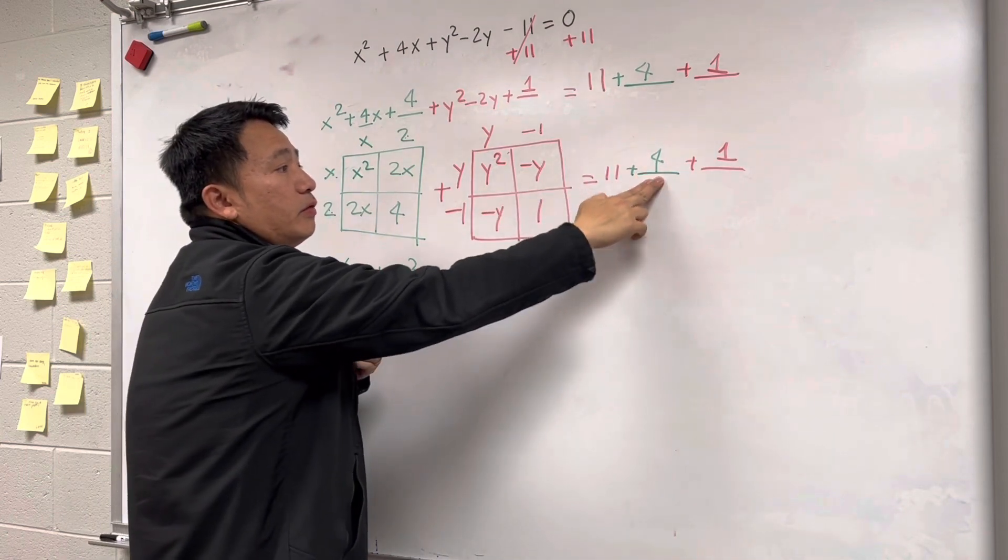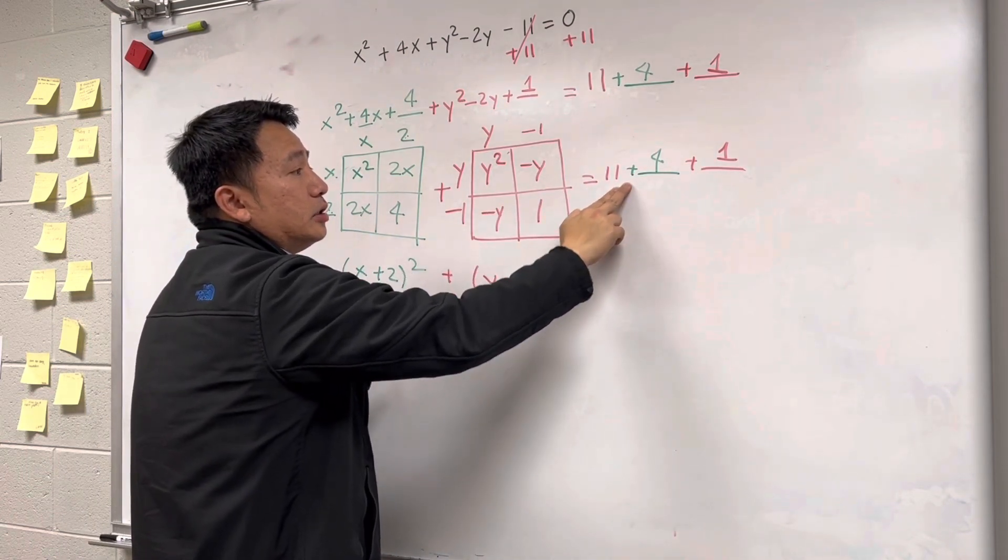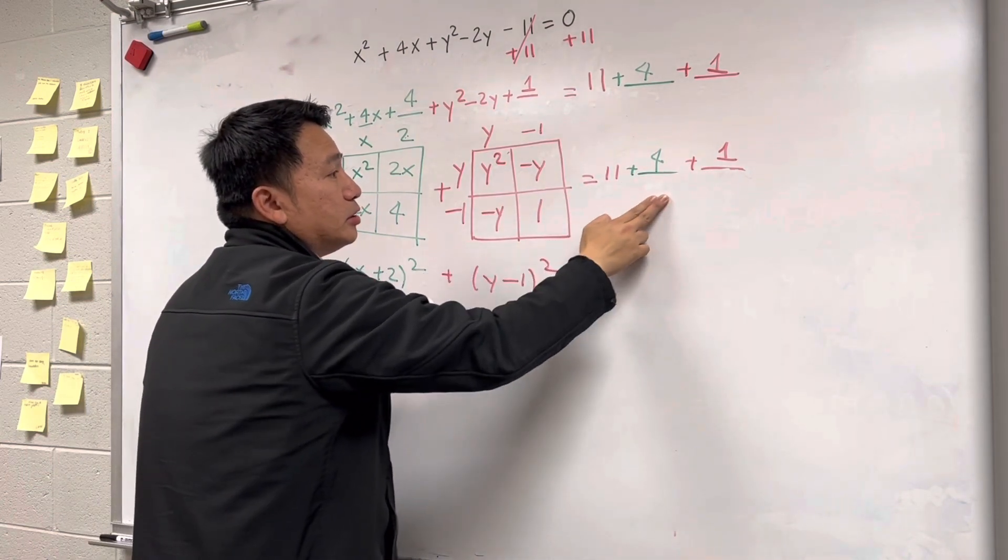And then 11 plus 5 is 16, right? 11 plus 5 is 16.